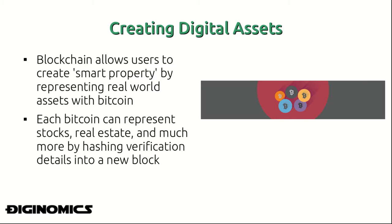The blockchain allows users to create smart property by representing them in the real world with Bitcoin. You may have heard Bitcoin described as programmable money, and this is essentially what we're talking about — because every unit of Bitcoin represents information technology. We can actually record and hash into that specific unit of money properties that it represents in the real world, and each Bitcoin can potentially represent stocks, real estate, and more.